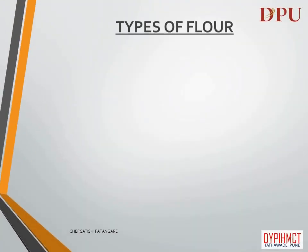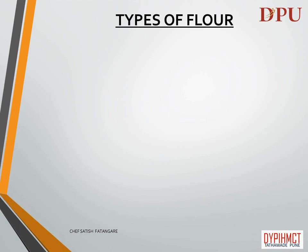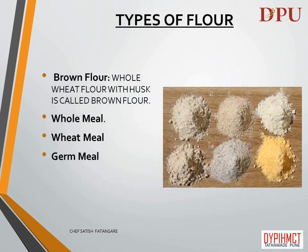In this slide we will discuss about different types of flour. The types of flour are: Brown flour — whole wheat flour with husk is called brown flour. The types of brown flour are: Whole meal, where 100% best quality whole wheat grain is used; Wheat meal, which is the same as whole meal flour but only 85% of whole wheat grain is used; and Germ meal, which has a higher percentage of germ that is cooked and mixed with salt before mixing in the flour.